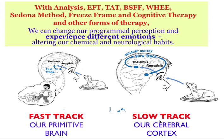The slow track goes through our cerebral cortex, and our interpretation is that it goes through the brain, it's interpreted, and then a reaction is created.